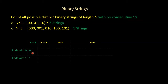For n equal to 2, what you have to do is take all the strings from n equal to 1 and append 0 to them. And take strings which end with 0 and append 1 to them. So I took all the strings from n equal to 1, appended 0 to them to form n equal to 2 strings, and then took all the strings which end with 0 from n equal to 1 and added 1 to them. The idea is: add 0 to any string no matter what it ends with, and add 1 only to strings which end with 0. That way we ensure that no strings contain consecutive ones.